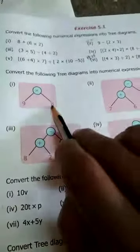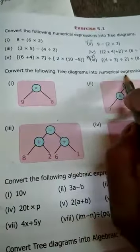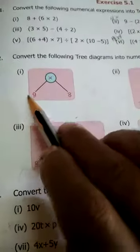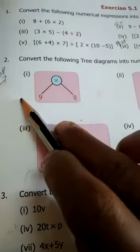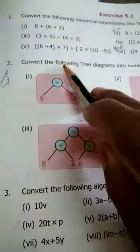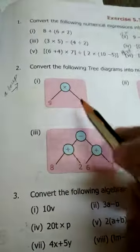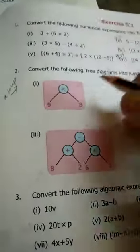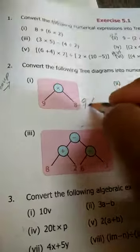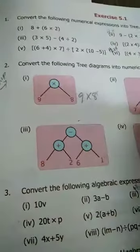Tree diagram is given. Now you can write the numerical expressions. Look at this. This is only one term: 9. So down then up. So 9 into 8. You write the answer as 9 into 8.